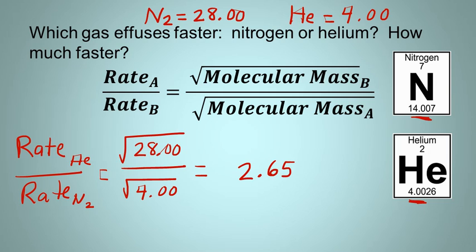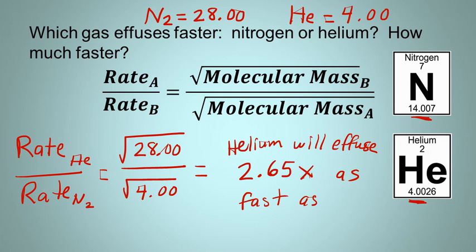And you can punch that into your calculator. And the answer is 2.65. And so we have to answer both parts of this question. And so perhaps a good way to say this would be helium will effuse 2.65 times as fast as nitrogen. And so that answers both parts of the question correctly. And that's how we use Graham's Law of Effusion.